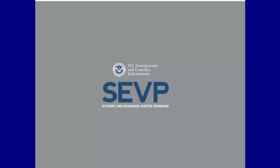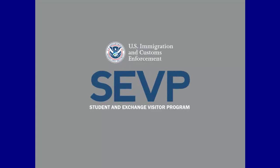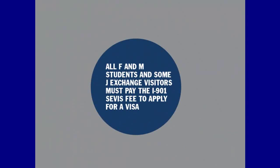Congress mandates the I-901 SEVIS fee to support these functions. All F and M students and some J exchange visitors must pay the I-901 SEVIS fee to apply for a visa to enter the United States. In this tutorial, we will show you how to pay your I-901 SEVIS fee with one of the following payment options.